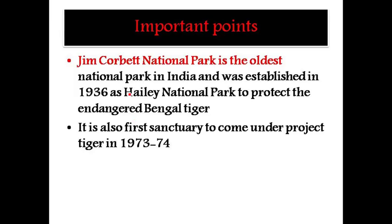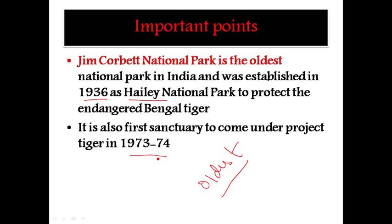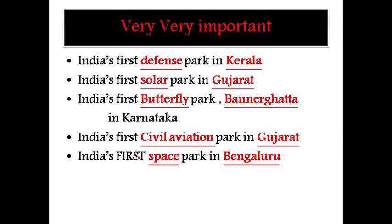Jim Corbett National Park is the oldest national park in India, established in the year 1936. Its other name is Hailey National Park. It is also the first sanctuary to come under Project Tiger in the year 1973 to 1974.